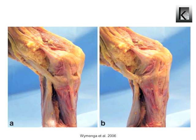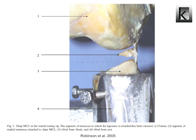Due to their wedge-shaped form, the menisci tend to be extruded out of the knee joint under axial joint loads. To avoid this and to satisfy their biomechanical function, the menisci are attached to the tibial plateau by strong ligaments. The deep MCL is part of the meniscus-stabilizing ligaments and is also a secondary valgus stabilizer of the knee.